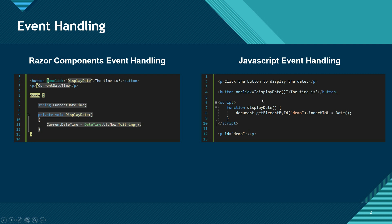Whenever you click on this button, it calls that function, which assigns the current date time to the innerHTML of a paragraph element. The same thing in a Razor component — I use an attribute called onclick, and that way I can map my onclick event of the HTML button to a C# function, allowing me to use all the .NET libraries to assign the current date time.